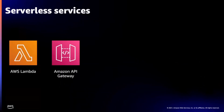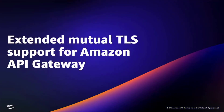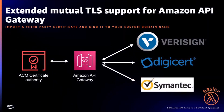Now let's talk about what's new with API Gateway. API Gateway is a serverless API service that makes it easy for developers to create, publish, maintain, monitor, and secure APIs at any scale. One of the big things we did this year was extend our mutual TLS support to third parties. Now you can import a third party certificate, such as VeriSign or DigiCert, and bind it to your custom domain name for a mutual TLS enabled API. Previously, you could only use a certificate generated from Amazon Certificate Manager.